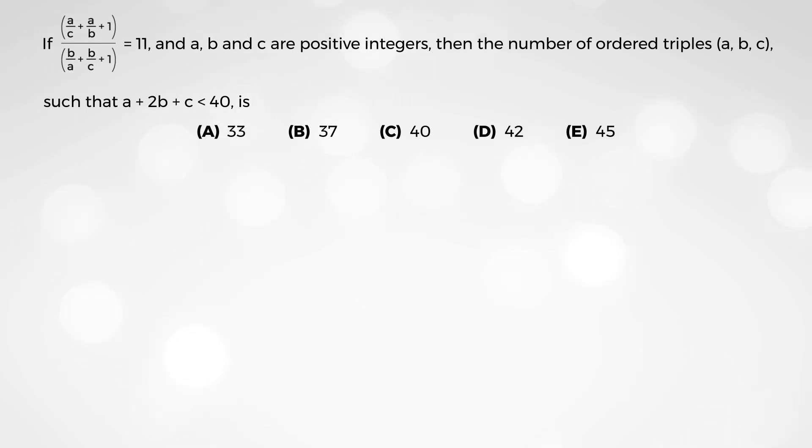If this fraction is equal to 11, and a, b, and c are positive integers, then the number of ordered triples (a, b, c) such that a plus 2b plus c is less than or equal to 40, is.